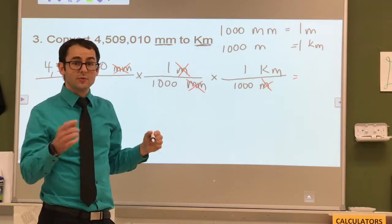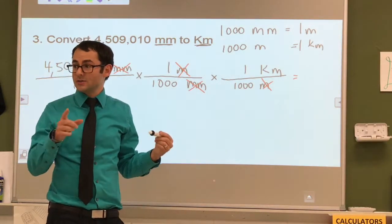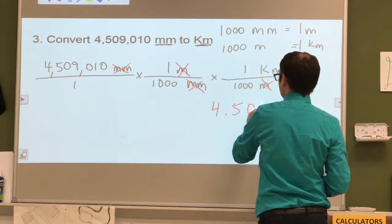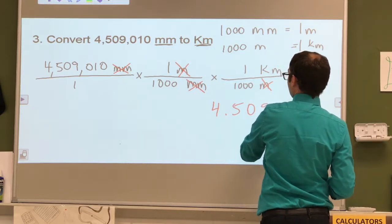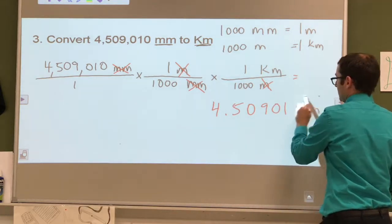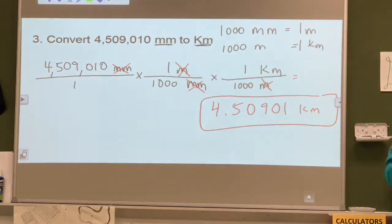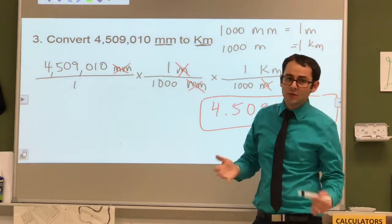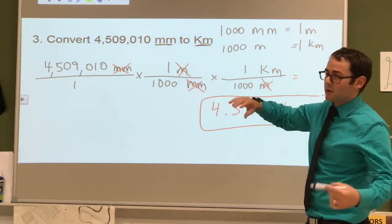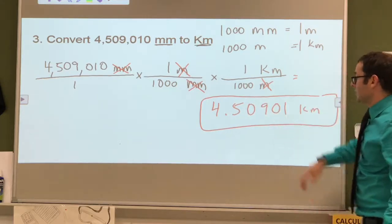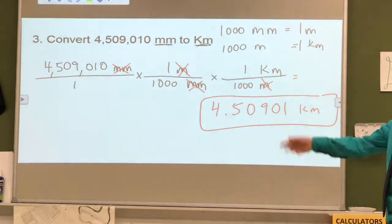Really try this with your calculator to make sure that you're putting it in correctly. Your answer should be 4.50901 kilometers. And again, if you don't get that answer, you're not putting it in the calculator correctly. It should be this number divided by a thousand, and then hit the equal sign, or the enter key, whatever you have on your calculator, and then do it again. Then divide it by a thousand, and that will give you 4.50901.